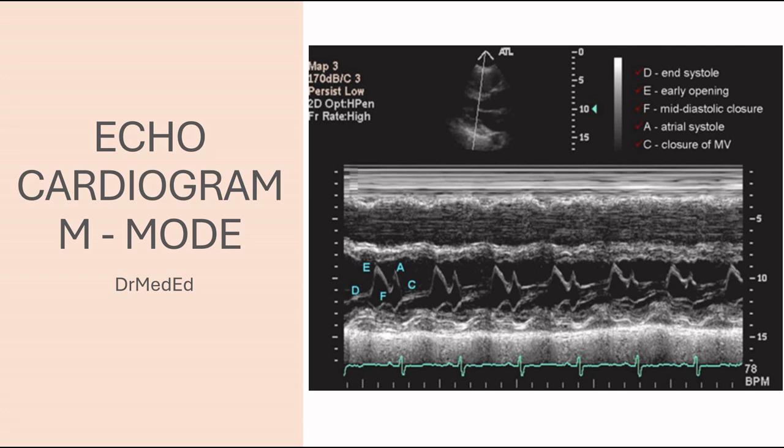Hello everyone, Dr. Matt Ed. Today we'll talk about echocardiogram and M-mode. These letters here, D, E, F, A, C, they signify the stages of the cardiac cycle.